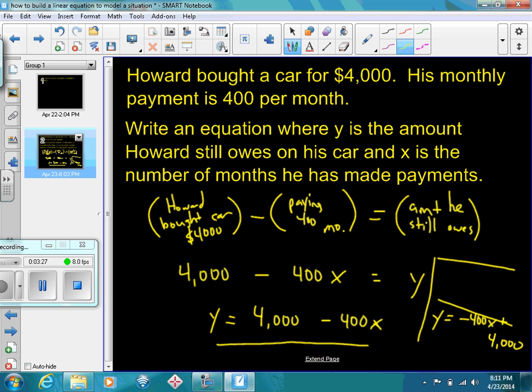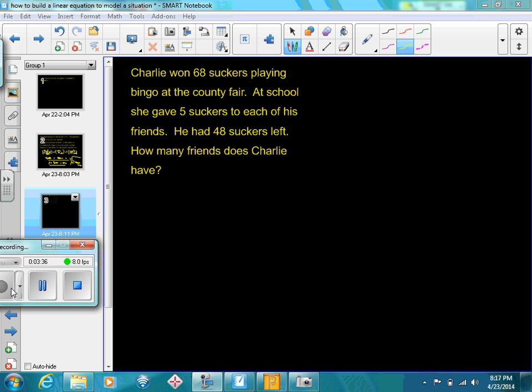Let's look at another situation. Charlie won 68 suckers playing bingo at some county fair. He gets back to school and he's going to give 5 suckers to each of his friends. He's got 48 suckers left over after he does this. How many friends does Charlie have? So basically, x is what we need to figure out. X is the number of friends that Charlie has.